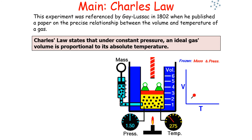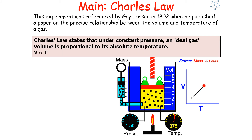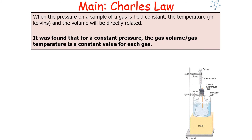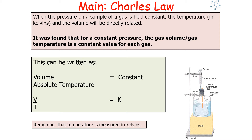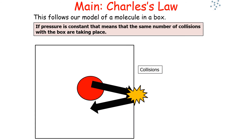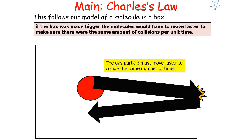Charles' law states that under constant pressure, an ideal gas's volume is proportional to its absolute temperature, so V is directly proportional to T. When the pressure on a sample of gas is held constant, the temperature in Kelvins and the volume of the gas are directly related. It was found that volume divided by temperature is a constant value, but only when temperature is measured in Kelvin. This follows our particle-in-a-box model: if pressure is constant, there are the same number of collisions with the container every second. If we make the box bigger, the gas molecules must move faster to maintain the same number of collisions, so the temperature goes up.